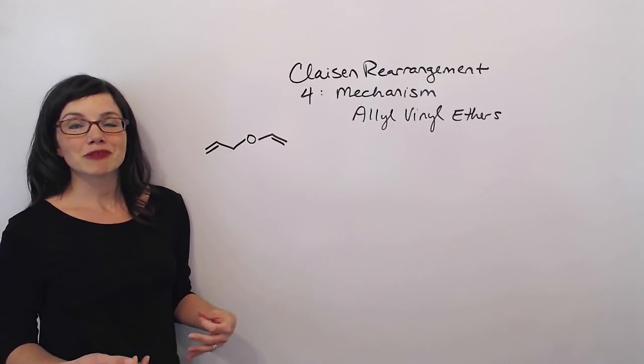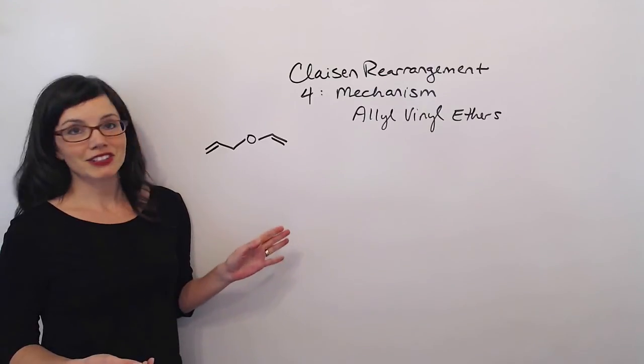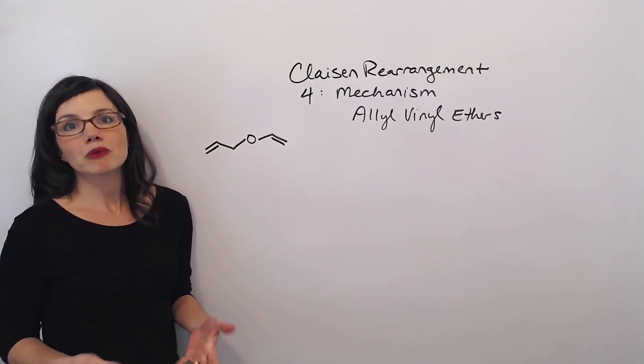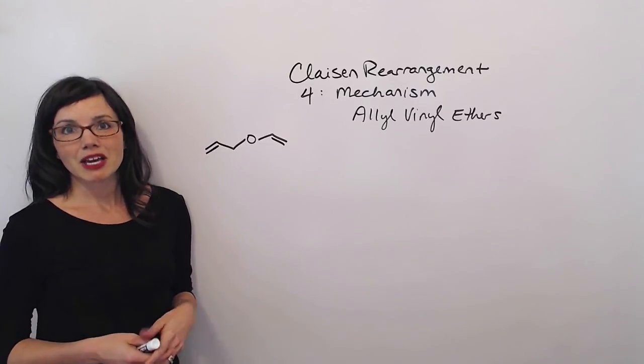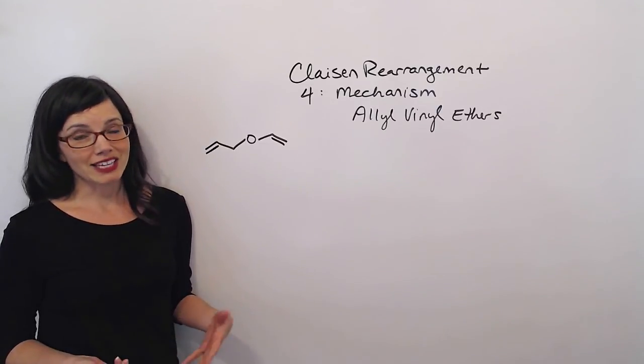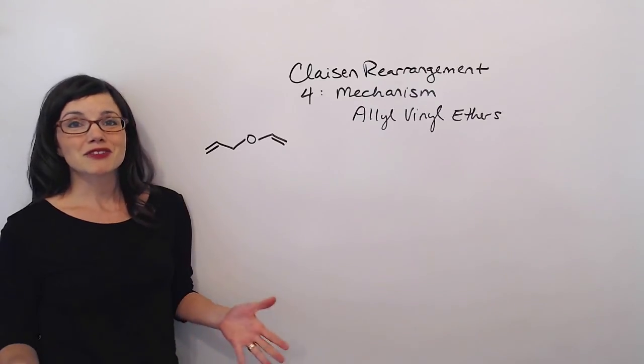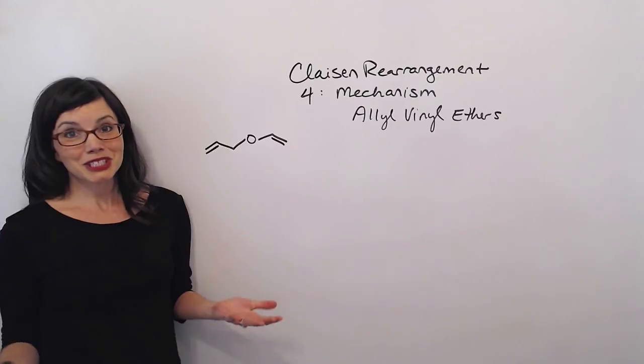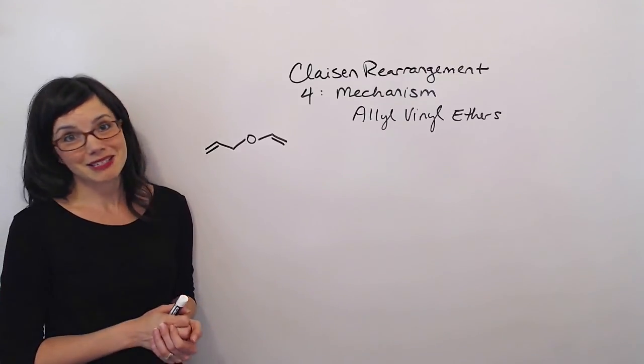When we do the rearrangement on allyl phenyl ethers, it's the aromatic Claisen rearrangement, which is probably the one you're going to see the majority of the time. Most professors don't actually cover the aliphatic Claisen rearrangement, but since a few of them do, I want to take a few minutes and show it to you. The good news is, it's actually a pretty easy mechanism.